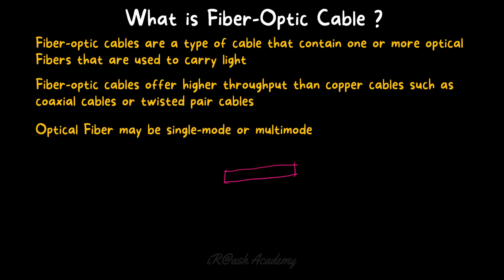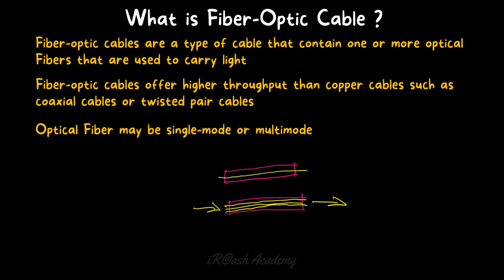Some fiber optic cables contain only one single optical fiber, while others contain more than one. The function of the optical fiber is to carry light — when data is sent from one side to the other, it flows through the optical fiber in the form of light. Fiber optic cables are much better than copper cables because they provide higher throughput and higher bandwidth. Data transfer through fiber is very fast compared to copper, which has limitations in distance and bandwidth, while fiber has the advantage of long distance and faster data rates.